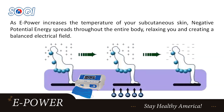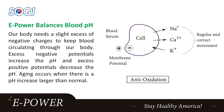As ePower increases the temperature of your subcutaneous skin, negative potential energy spreads throughout the entire body, relaxing you and creating a balanced electrical field. It also helps you balance the blood pH as well.